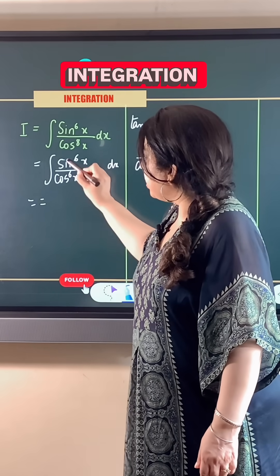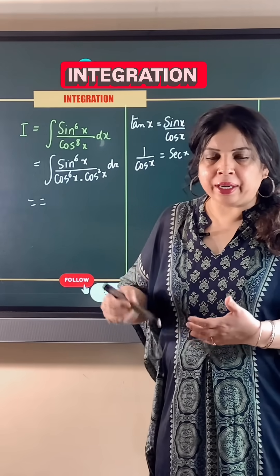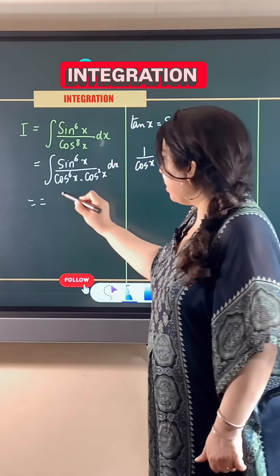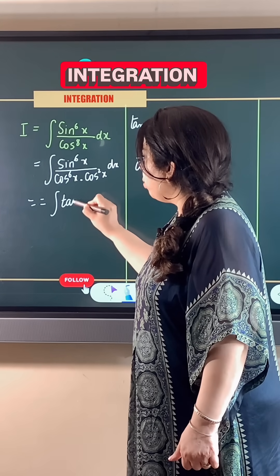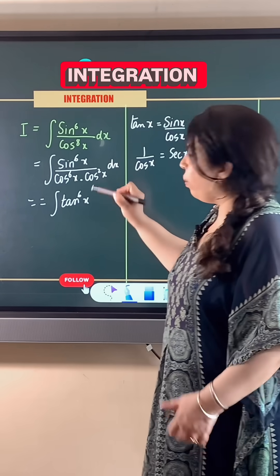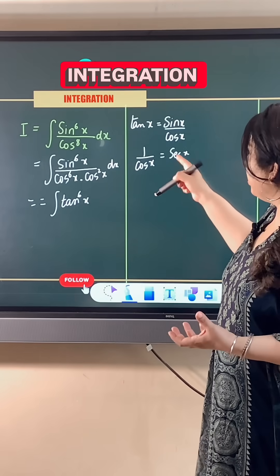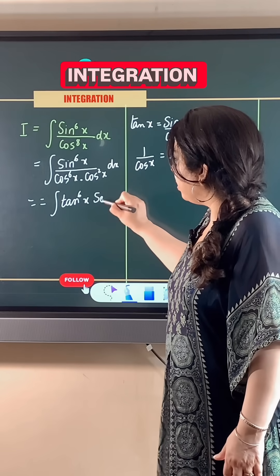So, this becomes sin divided by cos whole raised to power 6x becomes tan raised to power 6x and 1 upon cos square x becomes secant square x dx.